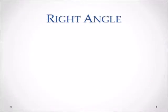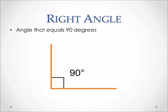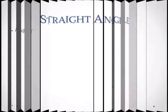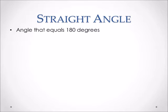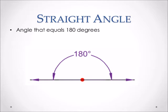Right angles are formed by two perpendicular lines and are equal to 90 degrees. Straight angles are formed by a straight line that equals 180 degrees.